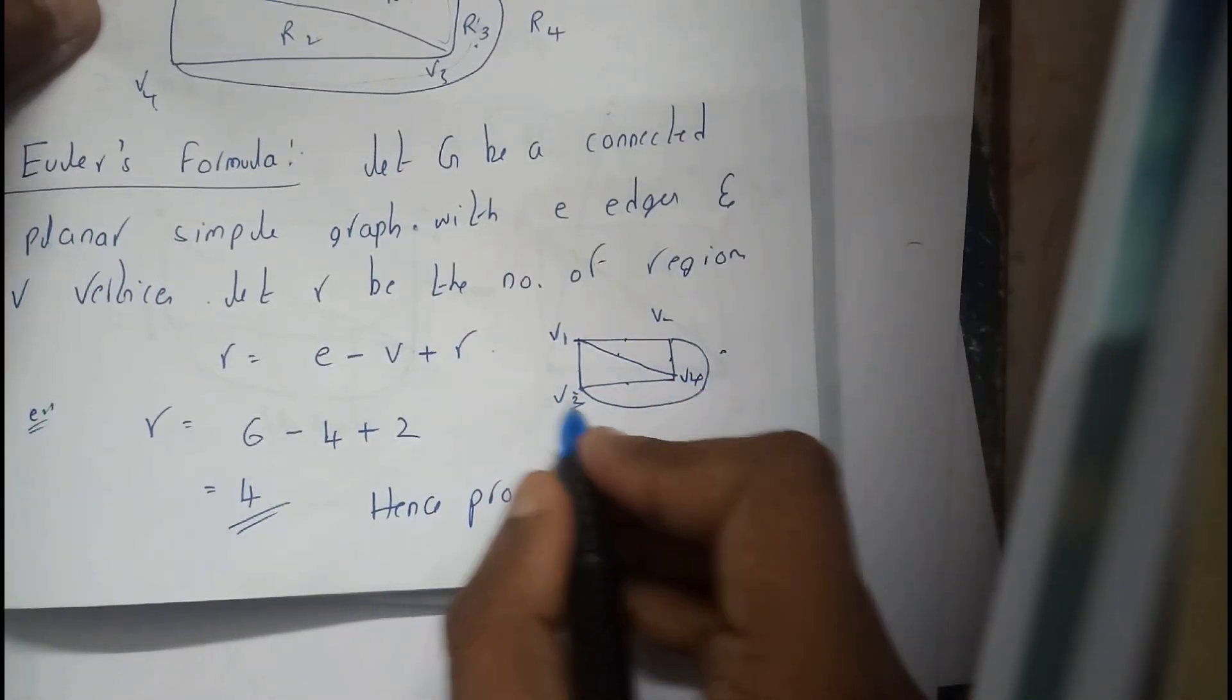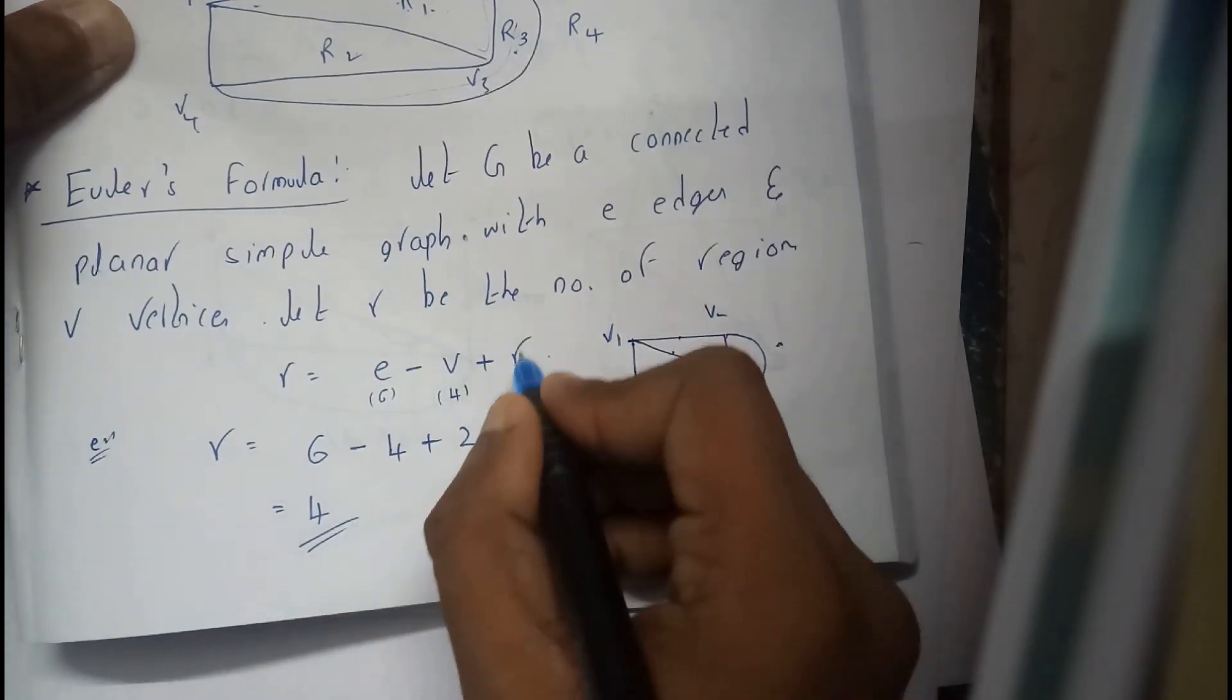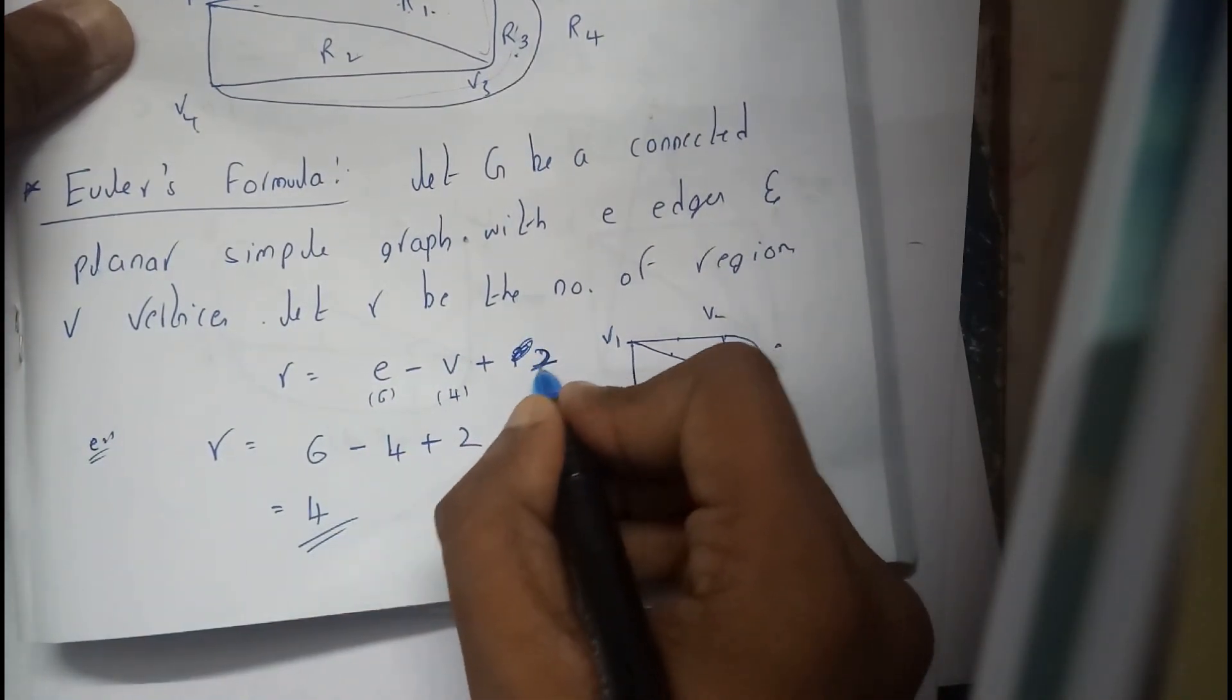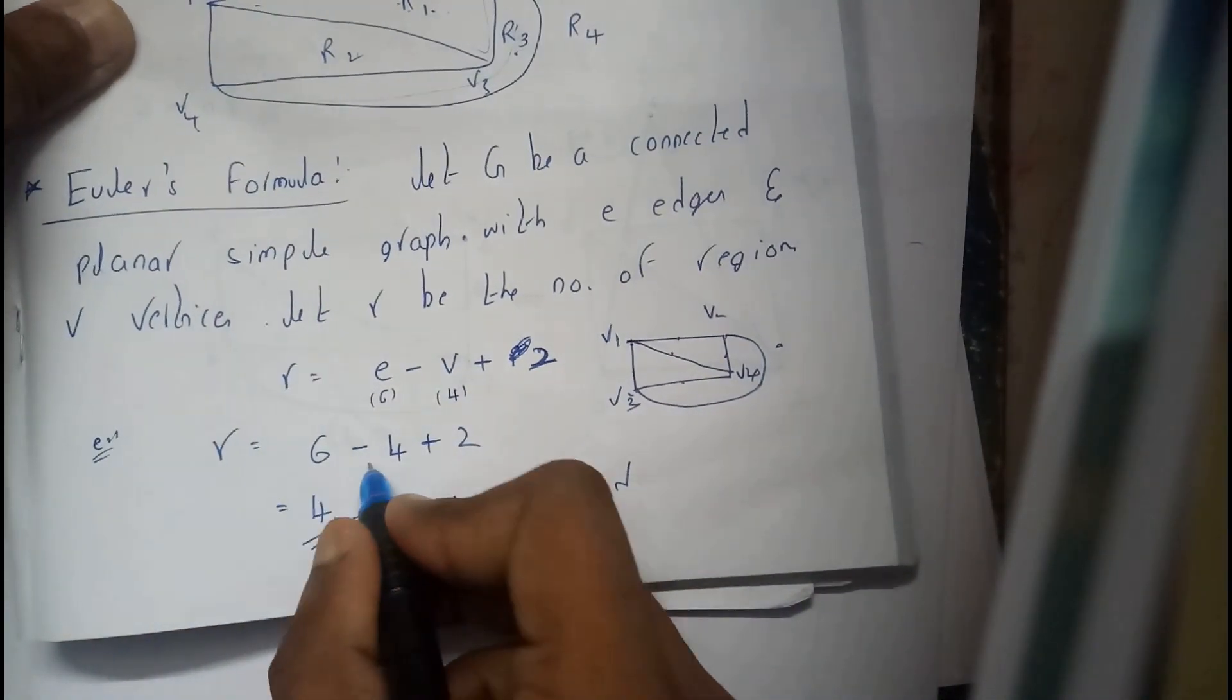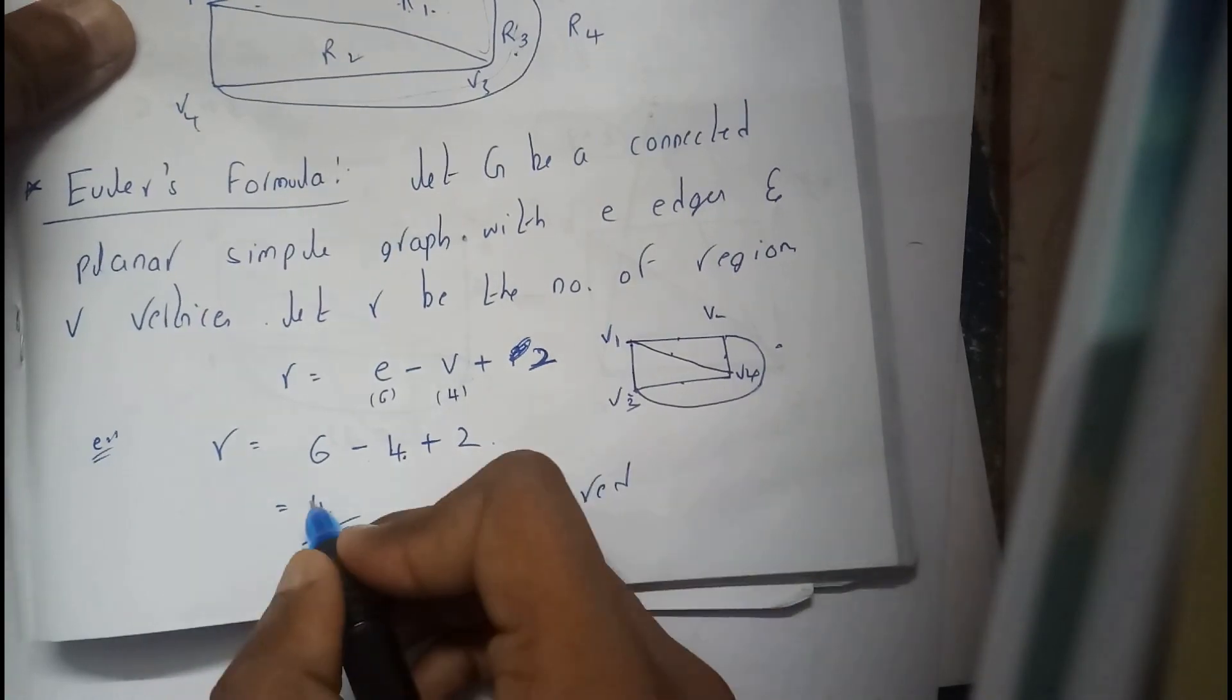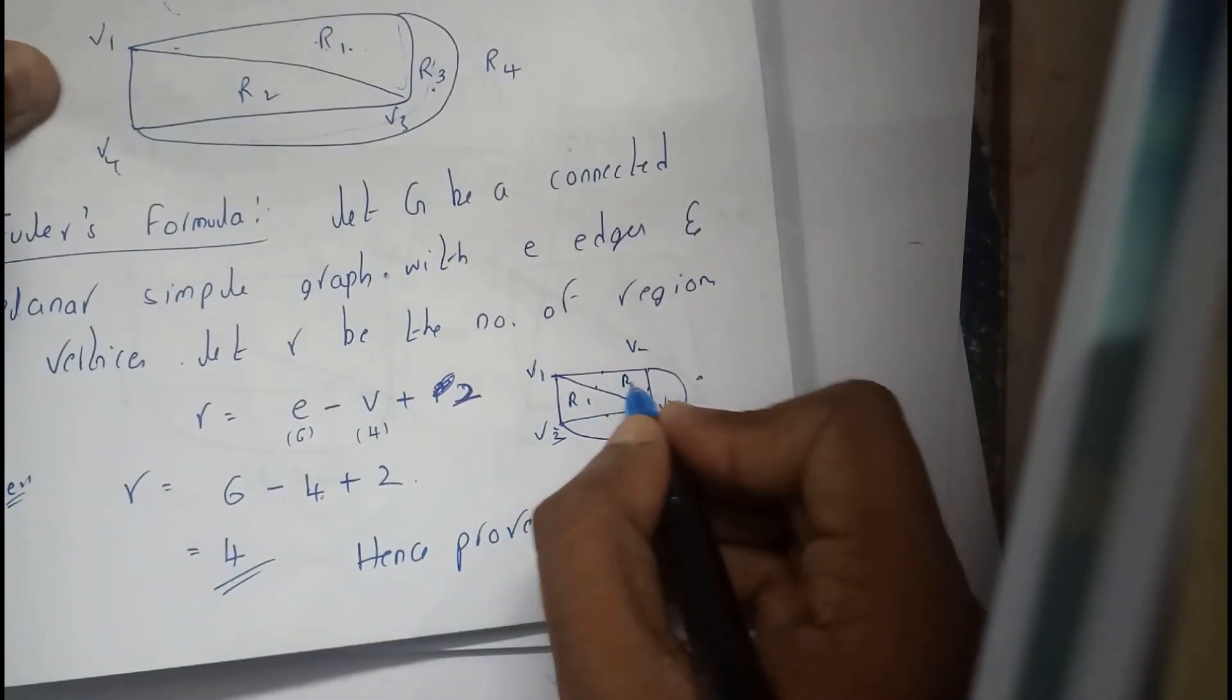Four, five, six - six edges, four vertices. This is R = E - V + 2, the formula. So R equals 6 minus 4 plus 2, that is 4. So we are having region R1, R2...